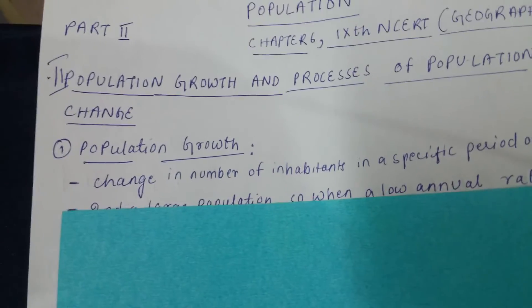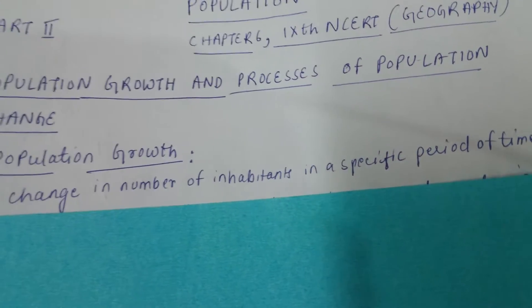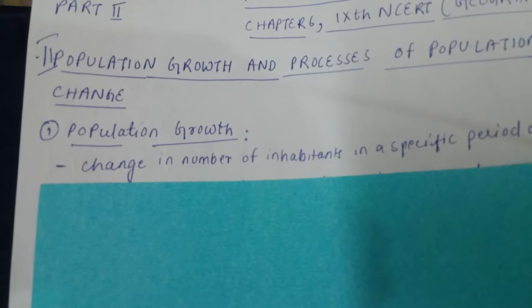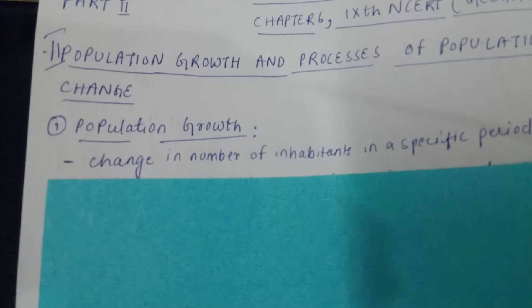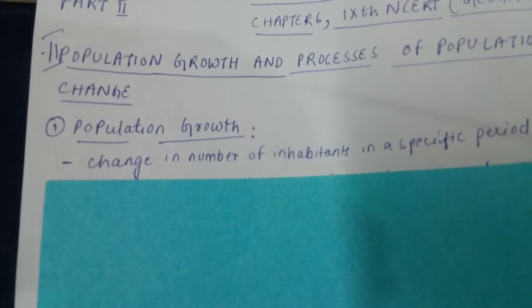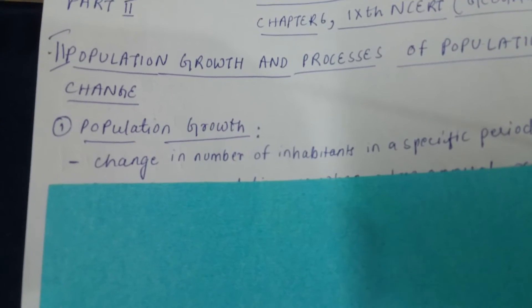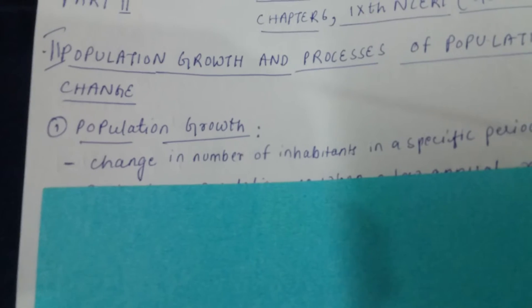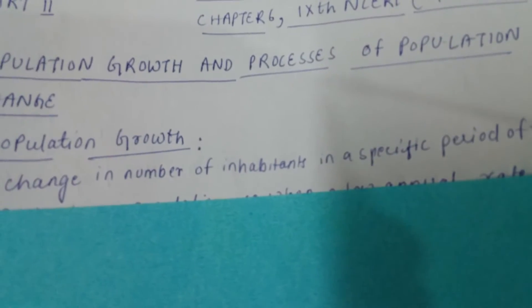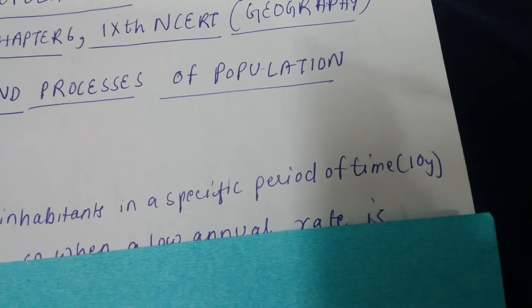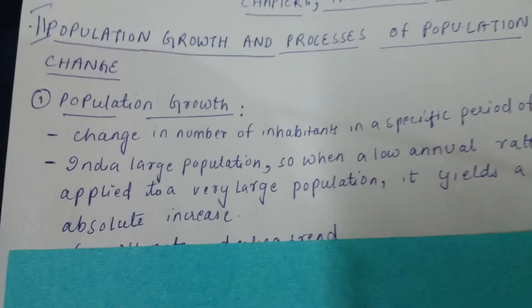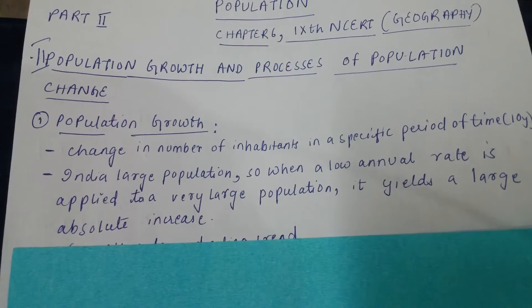The second point is population growth and processes of population change. So what is population growth? It is the change in number of inhabitants in a specific period of time. Say Cuttack city has population X in 2001 and Y in 2011 — to know the growth you subtract X from Y to find how many people were added. This change is usually calculated over 10 years to show a more accurate and stable trend.